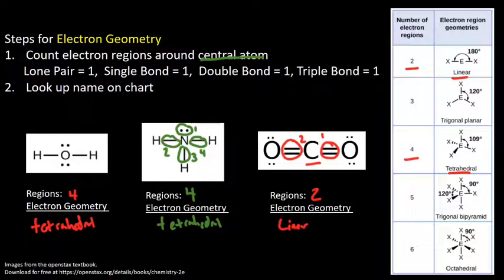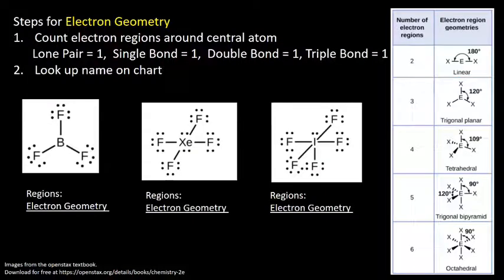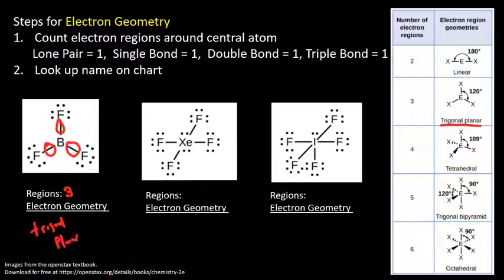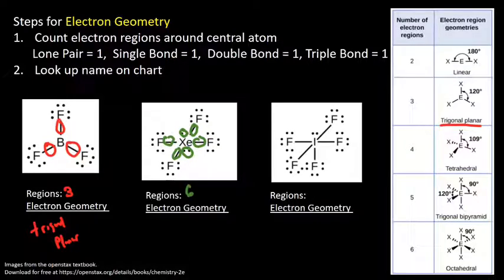Let's do a few more. We have BF3. Counting around boron: one, two, three regions. Its electron geometry is trigonal planar. Now let's count for XeF4. One lone pair, then two, three, four, five, six — so it has six regions. Each single bond counts as a region and each lone pair on the central atom counts as a region. The dots on fluorine don't count because they're not on the central atom and don't determine the shape. Six regions gives us octahedral.